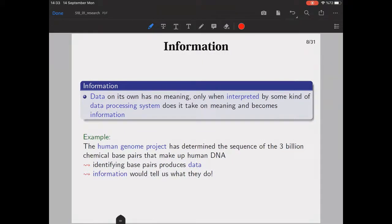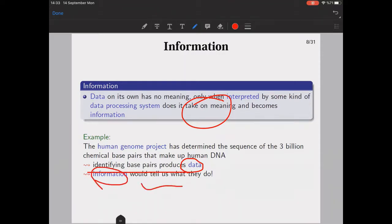What is information? We should know that data on its own has no meaning. For example, x equals 4.5 has no meaning unless we make some interconnections with the domain we're working on. It is only meaningful when interpreted by some kind of data processing system. For example, the Human Genome Project has determined the sequence of the 3 billion chemical base pairs that make up human DNA.